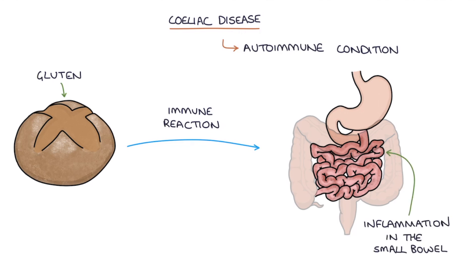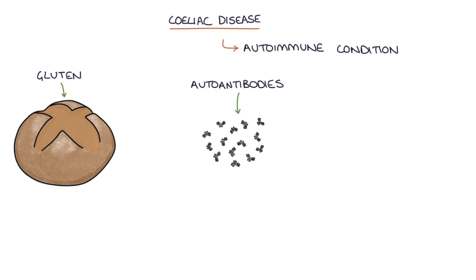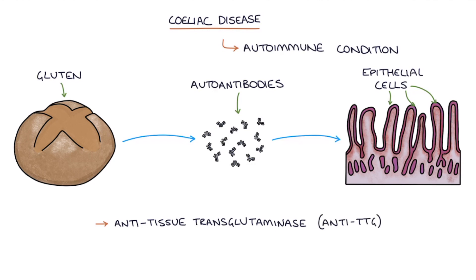It usually develops in early childhood but it can come on at any age. Autoantibodies — antibodies against the body's own tissues — are created in response to exposure to gluten, and the autoantibodies target the epithelial cells of the intestine and cause inflammation in these areas. There are two autoantibodies you need to remember: anti-tissue transglutaminase, which is anti-TTG, and the second one is anti-endomysial antibodies, which is anti-EMA.